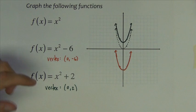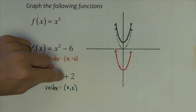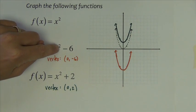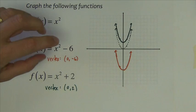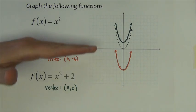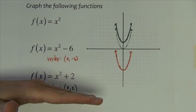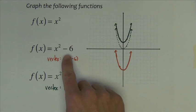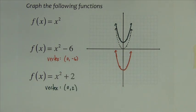So we could certainly say that adding and subtracting numbers behind the second power, outside the parentheses, have the effect of moving the graph up or down. Subtracting moves it down, adding moves it up.